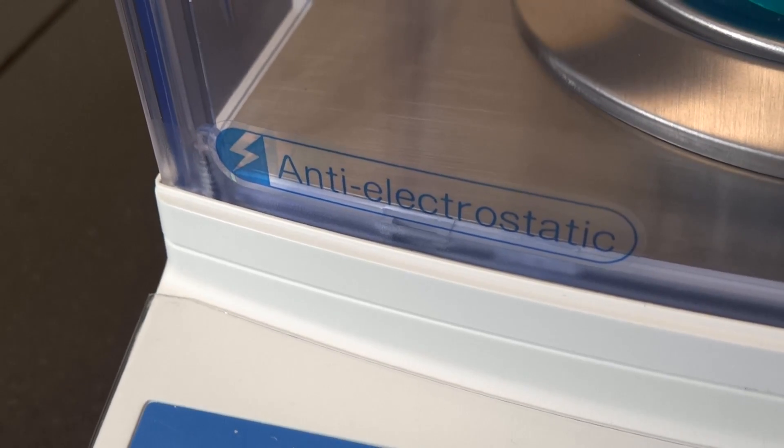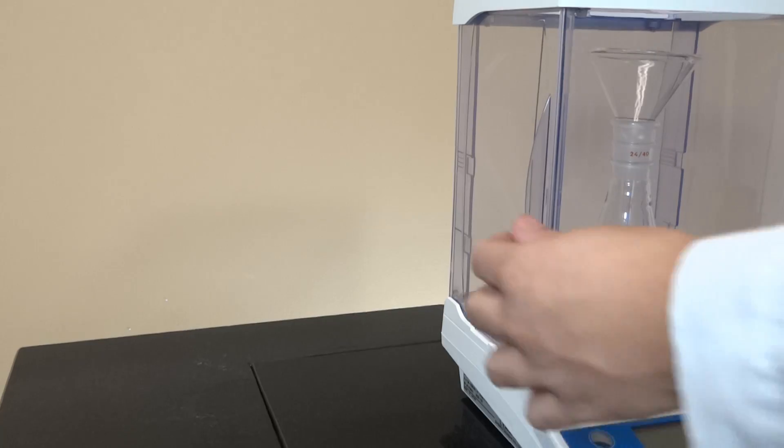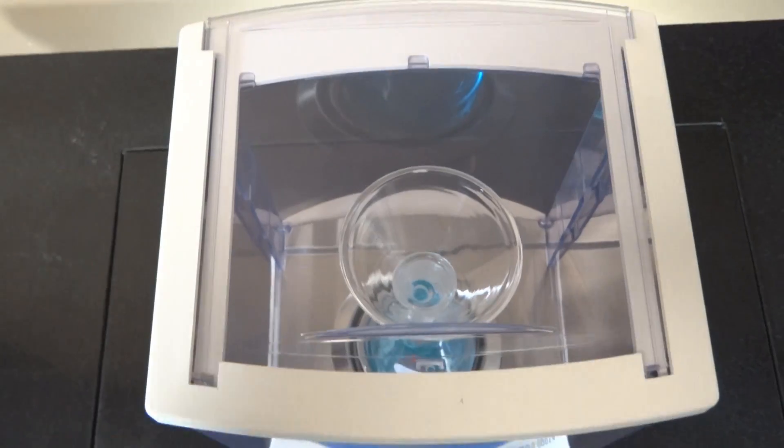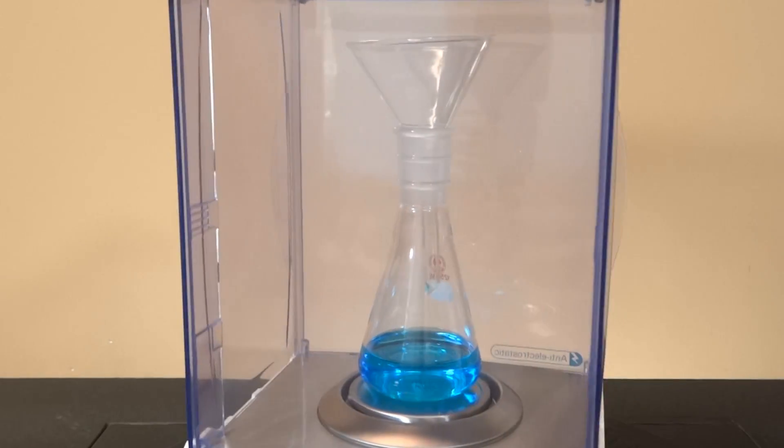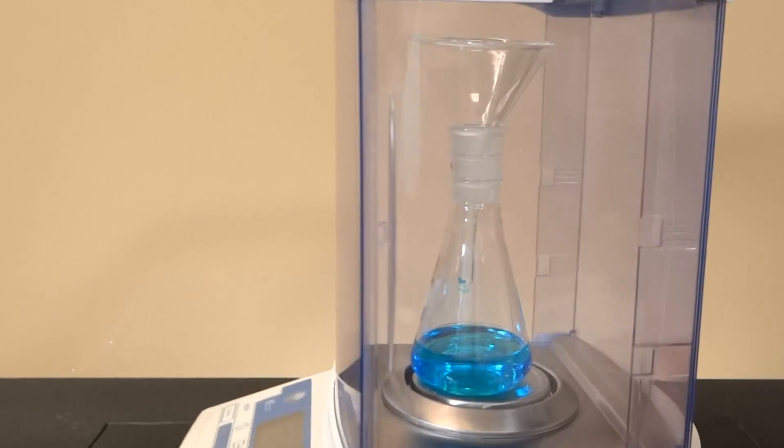The HT has three anti-static draft shield doors. The weighing chamber allows viewing from all four sides and from the top.